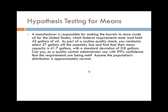A manufacturer is responsible for making the barrels to store crude oil for the U.S., which federal requirements state must hold 42 gallons. As part of a routine quality check, you randomly select 27 barrels off the assembly line and find that their mean capacity is 41.7 gallons, with a standard deviation of 0.8 gallons. Can you, as a quality control administrator, say with 99% confidence that requirements are being met? Assume that the population's distribution is approximately normal. So 99% confidence means that alpha is 0.01, where x-bar equals 41.7, s equals 0.8, n equals 27.